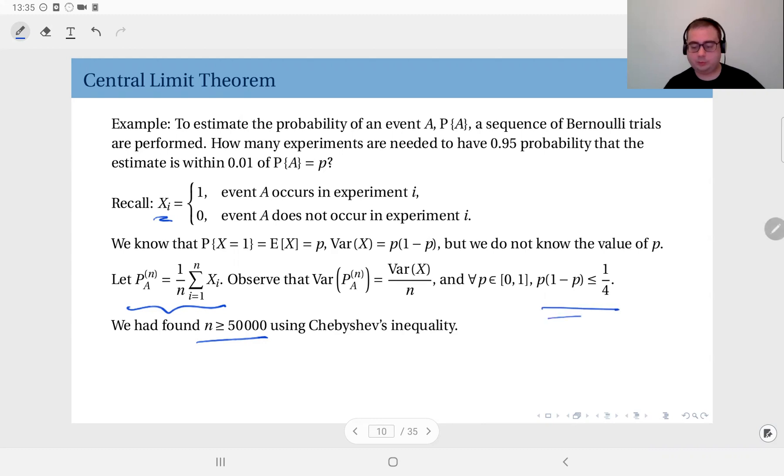And this was one key observation: p times 1 minus p is always below 1 over 4, we will still use this.